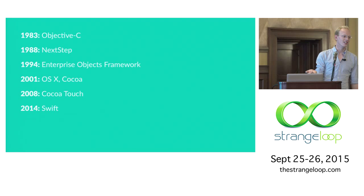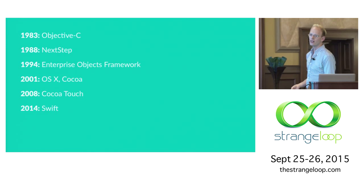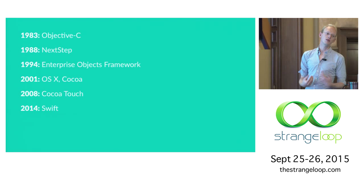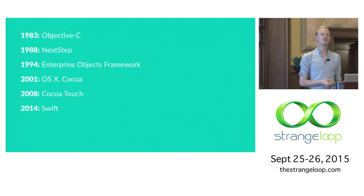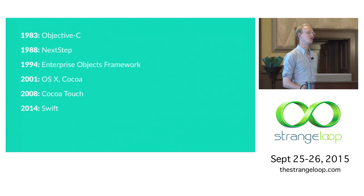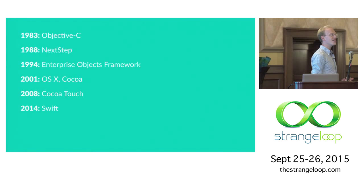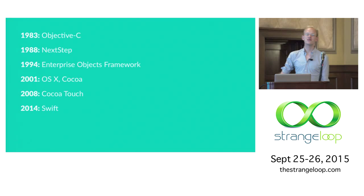When OS X started, the system itself was really a lot of C and C++. Over the years, particularly with iOS, more and more of the system began to be implemented in Objective-C. Objective-C started to be used as a core systems programming language, not just an applications programming language. And that's an important evolution because it really explains a lot of why it has been so important for Swift to have excellent Objective-C compatibility.